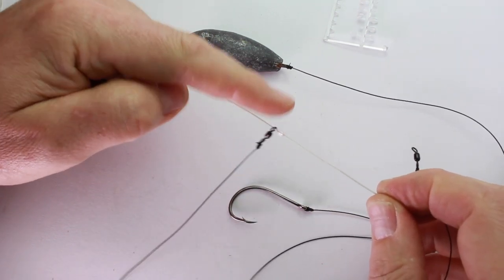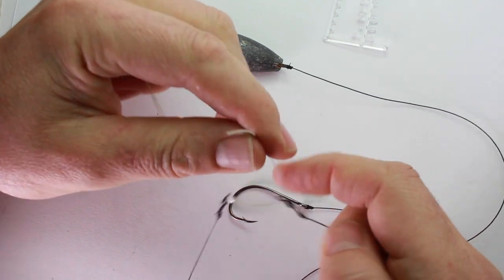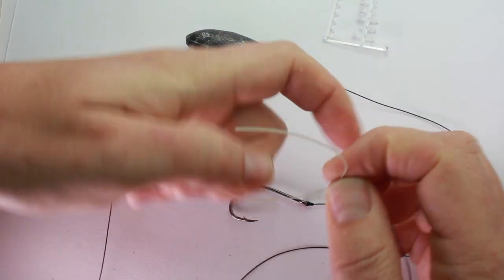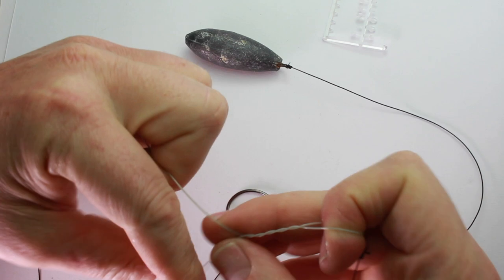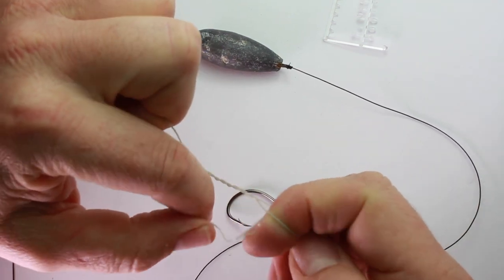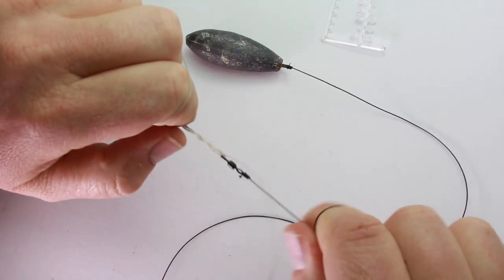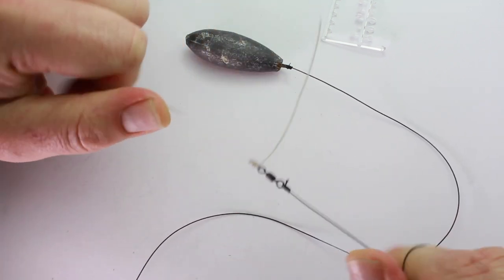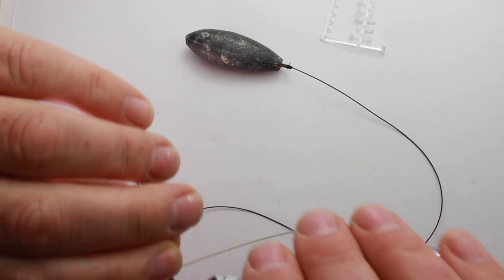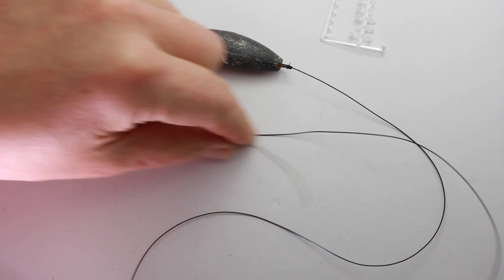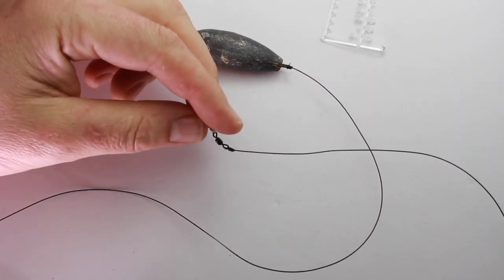Now you're tying the knot with your thicker main line. Same knot again—five turns, pull it tight after you've moistened it. There you go, then just clip it with the clippers. It's such a simple rig and it's all I use for fishing for bass now around the rocks, where there's big boulders and it's a bit snaggy.